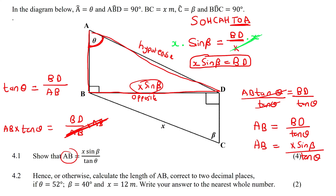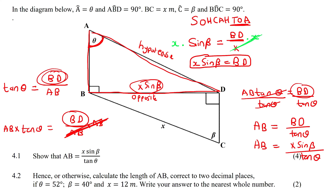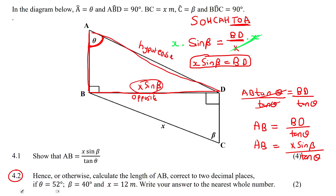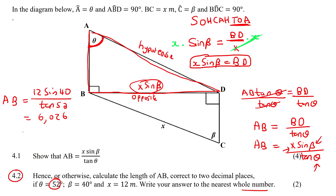I don't want to write x and beta the whole time — I kept writing it as BD and only at the end did I substitute it in. And that's exactly what they wanted us to find. The next part says: hence or otherwise, calculate the length of AB if theta is 52, beta is 40, and x is 12. So we just go fill it in — x is 12, beta is 40, theta is 52 — and literally type that all in. The answer is 6.026. But they said write your answer to the nearest whole number, so the nearest whole number would be 6 meters.